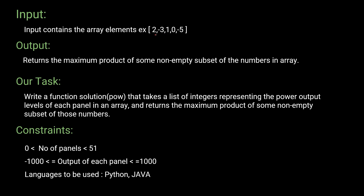We have to return the maximum product of some non-empty subset of the array. For example, for the input [-2, -3, 1, 0, 5], the maximum product is obtained by multiplying -5, -3 (giving 15) and then 2, so the output is 30. Our task is to write a function 'solution' that takes a list of integers representing the power output levels of each panel and returns the maximum product of some non-empty subset.